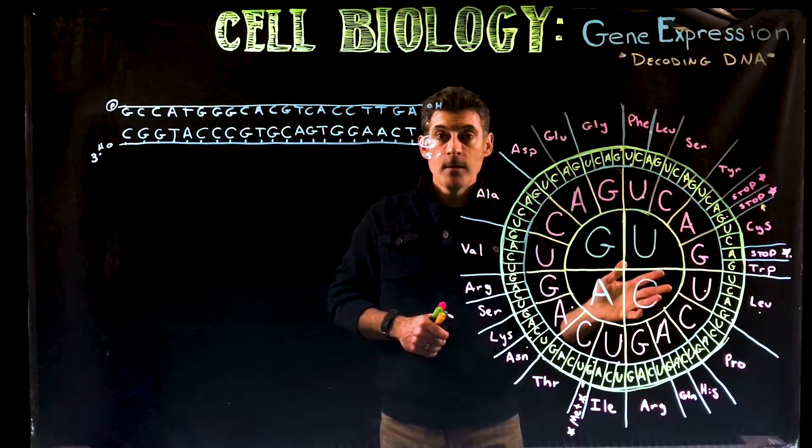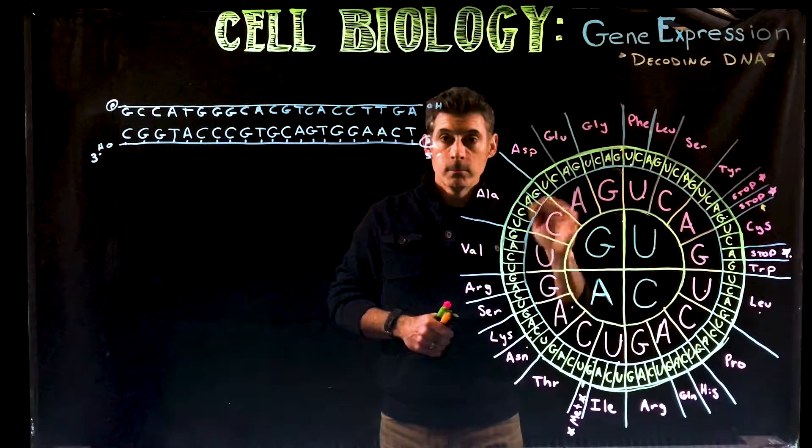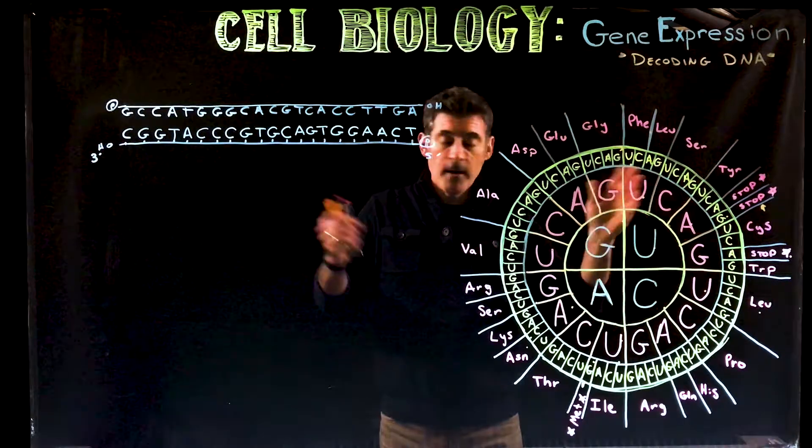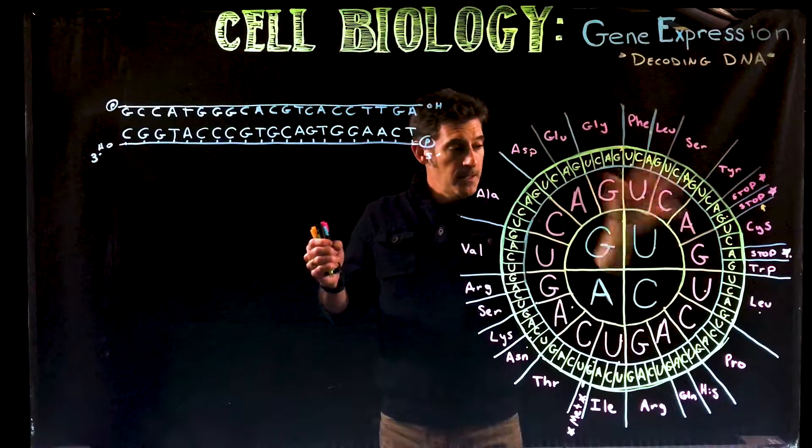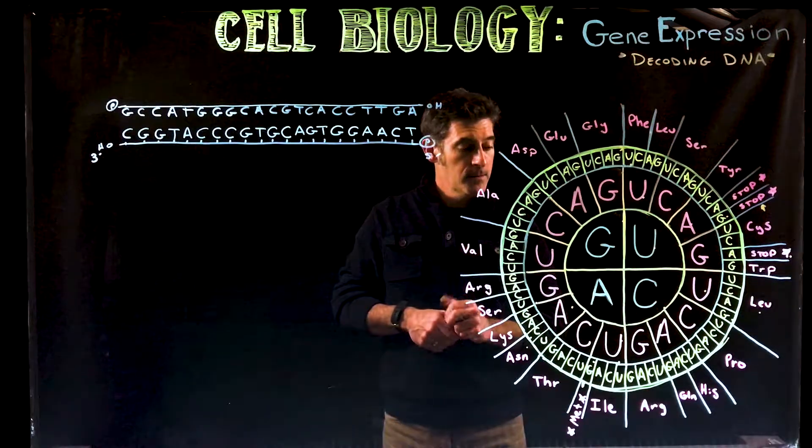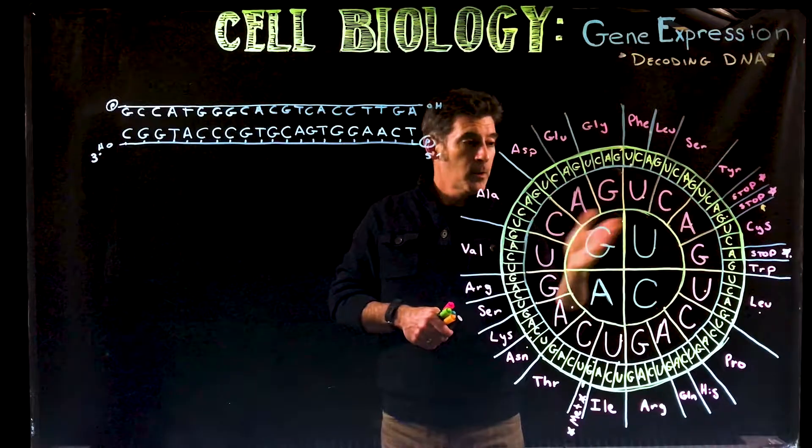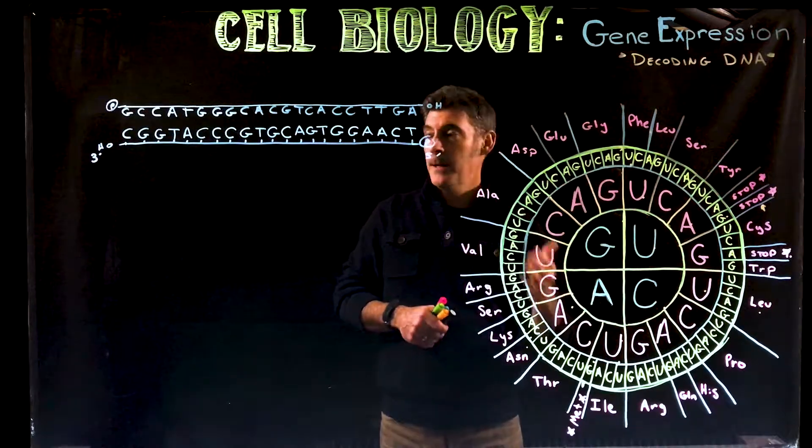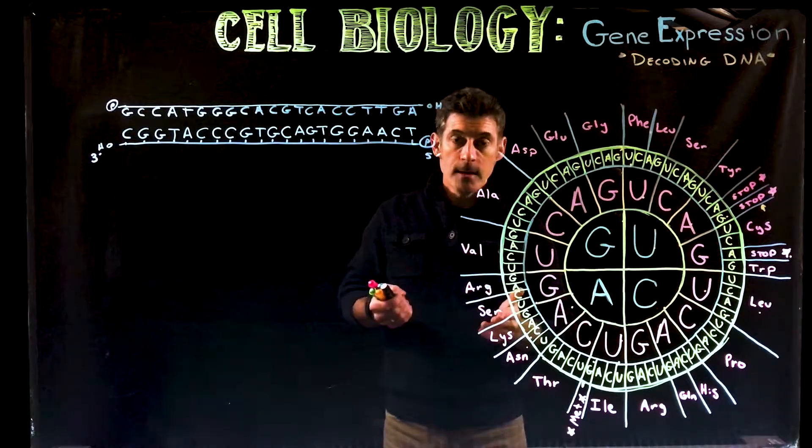You're going to see codon tables online in your books. This is one example of a codon table. If you Google codon table, you'll find a whole variety of them. You will see this circular one. It's often a favorite of many students. I'm going to go over how to read it and use it to actually decode the DNA.